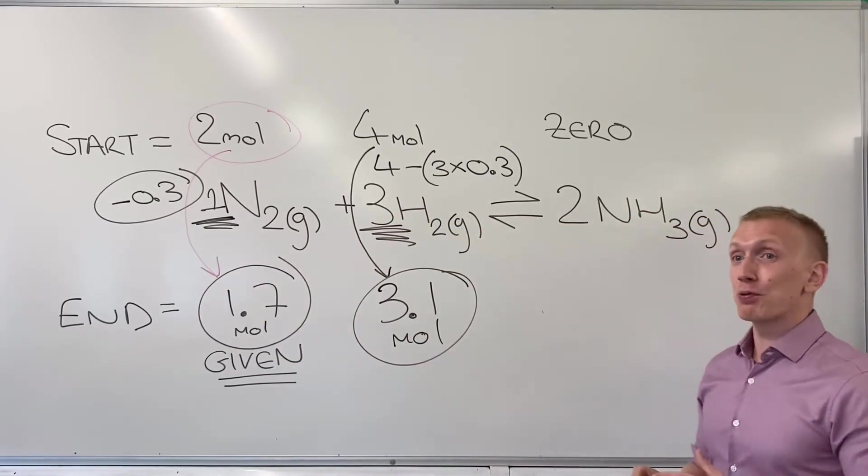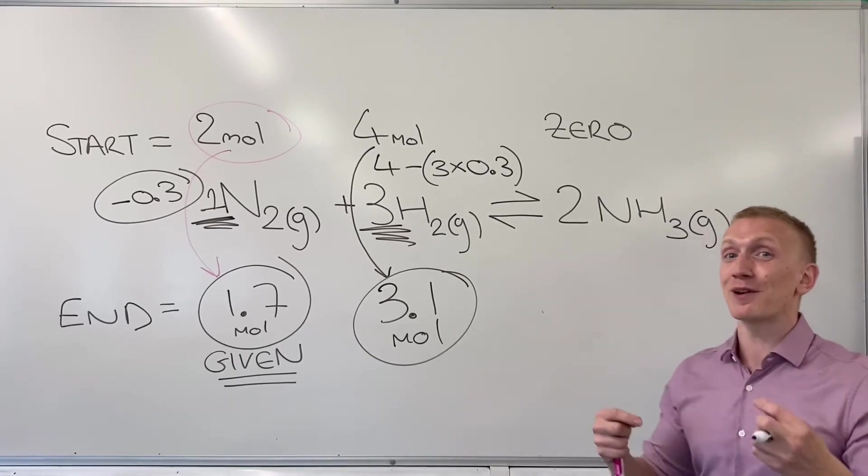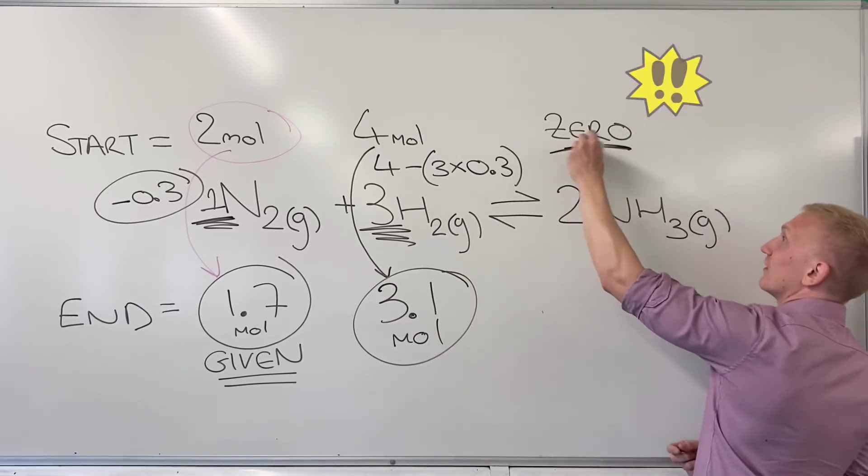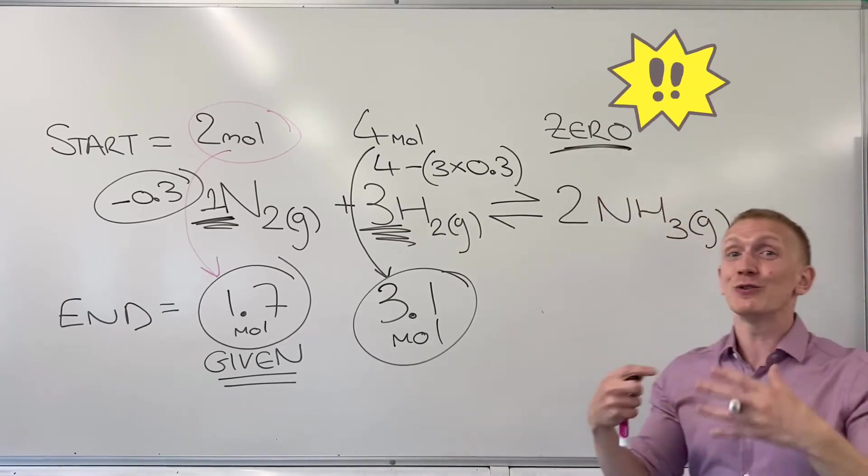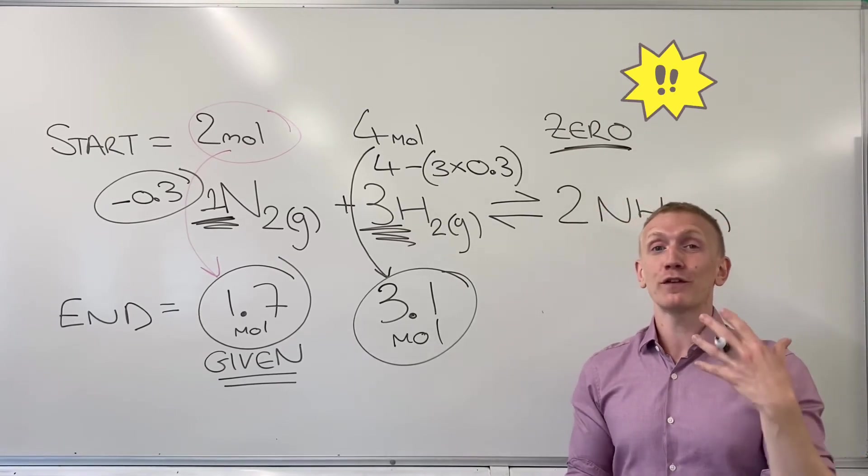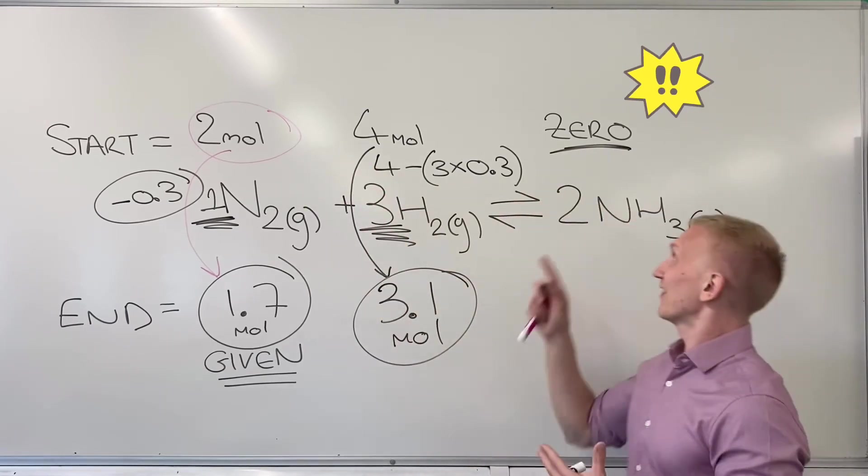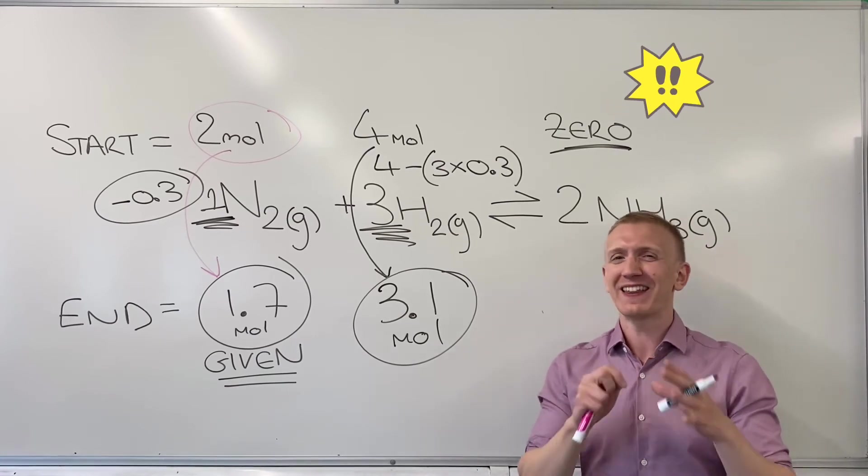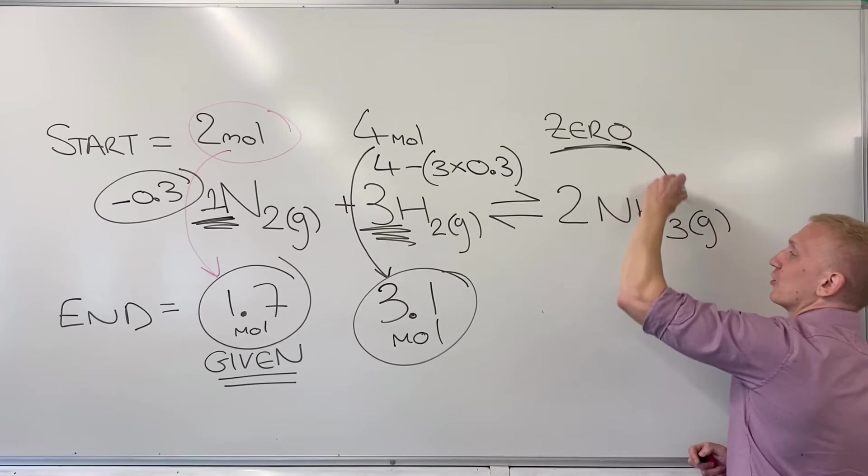Over here for our product we can do exactly the same thing except because it's a product remember it's going to go up so we're going to be producing it. It started off as 0 which is really very common. They may not even tell you that in the exam. You're meant to assume that if you've got mole values at the start for your reactants that your product didn't have any moles at the start so you might need to fill in the gaps almost with that piece of information. This then is going to go up.